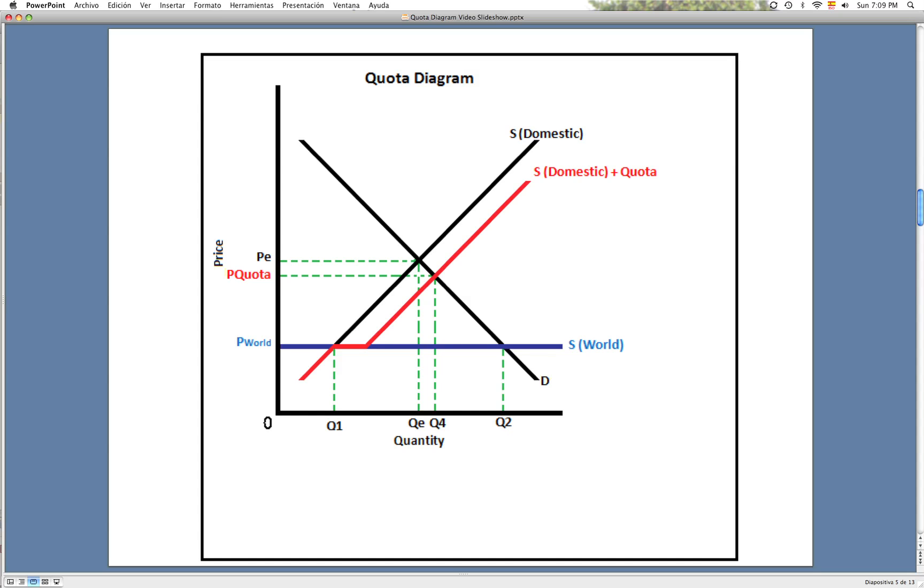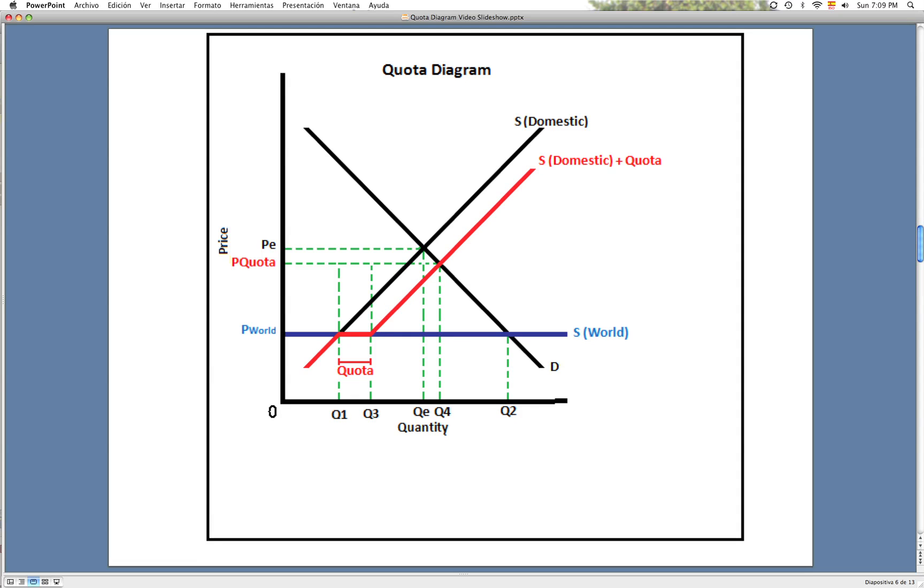It also creates Q3. In this diagram, we are assuming that the quota imposed is from Q1 to Q3, as it corresponds in the diagram.